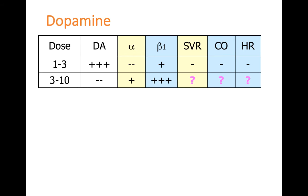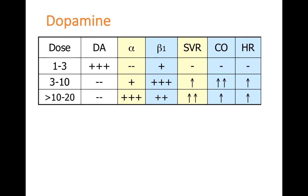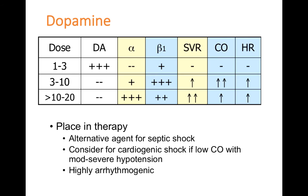At 3 to 10 mcg/kg/min, dopamine predominantly produces beta-1 effects with a little alpha, primarily increasing cardiac output and heart rate with some vasoconstriction. Above 10 to 20 mcg/kg/min, alpha predominates with some remaining beta-1, giving a bigger increase in SVR with still some increase in cardiac output and heart rate. Because of its mixed receptor effects, dopamine can be used in several types of shock. In septic shock it helps vasoconstriction, but it's currently viewed as second-line to norepinephrine because it's less potent for alpha constriction.